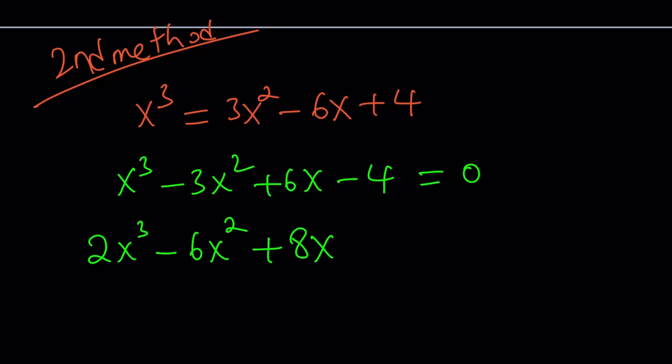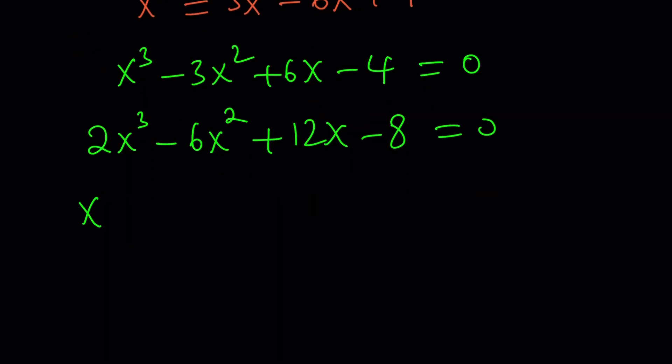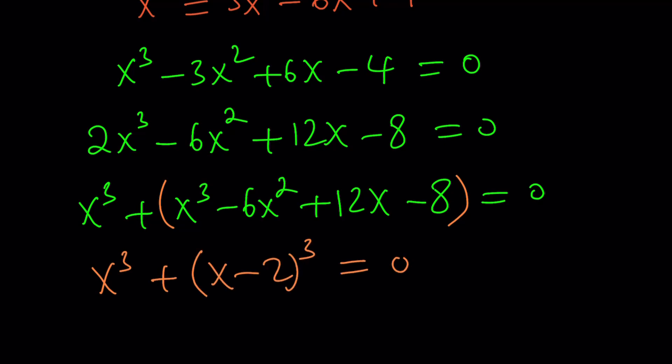I mean, not 8x, that's a 12. Minus 8 is equal to 0. Now, separate x cubed. Put that aside. And what do you get? You get a perfect cube plus another cube. In other words, sum of 2 cubes. Make sense? And that's equal to 0. Awesome. This is x minus 2 cubed. That's x cubed. Their sum is 0. And obviously, this is factorable.